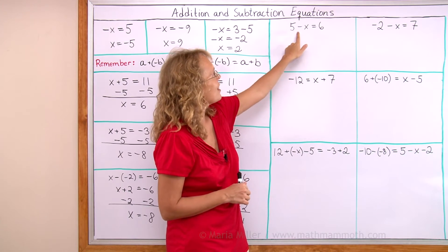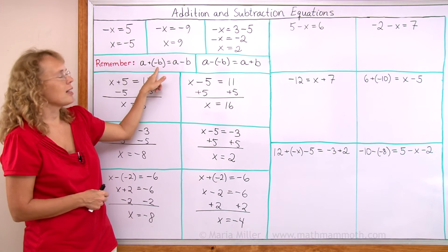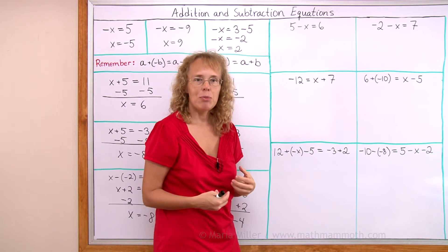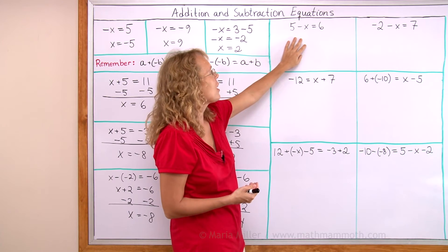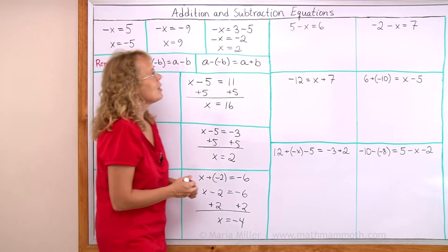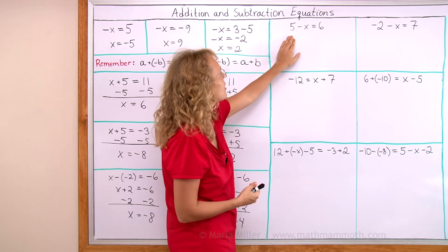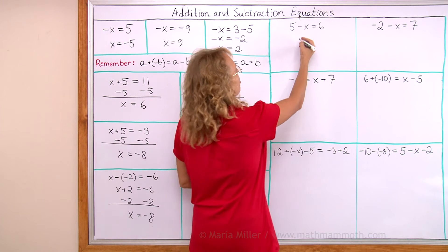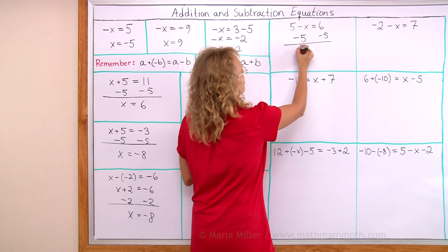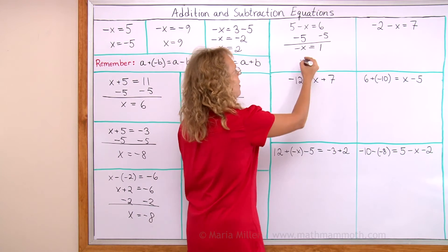Now we come to two equations that have negative x or minus x — x is being subtracted. When something is being subtracted, such as minus x, it's actually the same as adding negative x. I want to have negative x alone on this side and get rid of the 5, so I subtract 5 from both sides. The 5 and subtract 5 cancel, the negative x remains, and 6 minus 5 equals 1. Since the opposite of x is 1, x must equal negative 1.